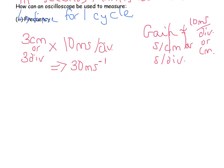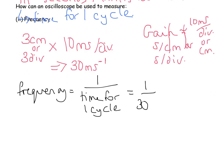So if you've got one cycle takes thirty milliseconds, to find out the number of cycles per second which is the frequency, it would be one divided by thirty times ten to the minus three because it's in milliseconds here, so you want to convert to seconds. And that will give you an answer of about thirty three hertz.